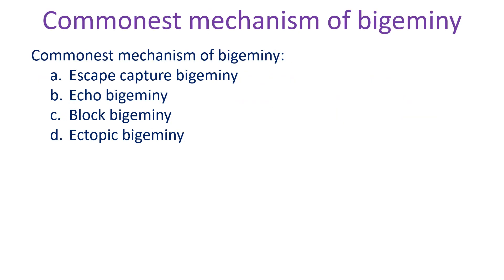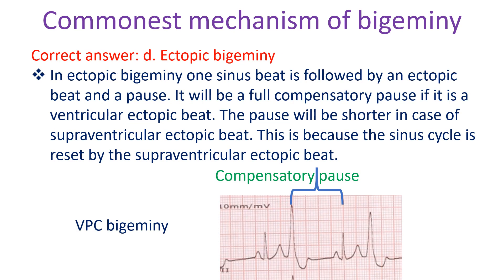Commonest mechanism of bigeminy. A: escape-capture bigeminy, B: echo bigeminy, C: block bigeminy, D: ectopic bigeminy. Correct answer D: ectopic bigeminy. In ectopic bigeminy, one sinus beat is followed by an ectopic beat and a pause. It will be a full compensatory pause if it is a ventricular ectopic beat. The pause will be shorter in case of a supraventricular ectopic beat, because the sinus cycle is reset by the supraventricular ectopic beat.